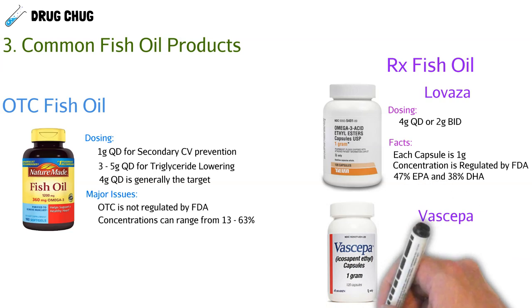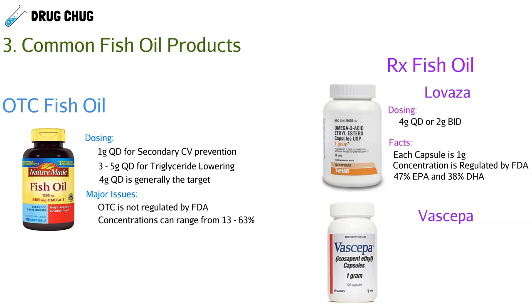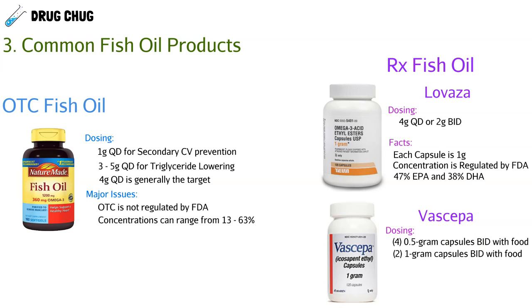The next prescription fish oil is Vascepa. The dosing is four half-gram capsules twice a day with food, or two one-gram capsules twice a day with food — both coming out to a target of four grams daily. Vascepa isn't traditional EPA or DHA; it's a derivative called icosapent ethyl that works similarly. The most important thing about Vascepa is that it must be taken with food, because it causes notable side effects.